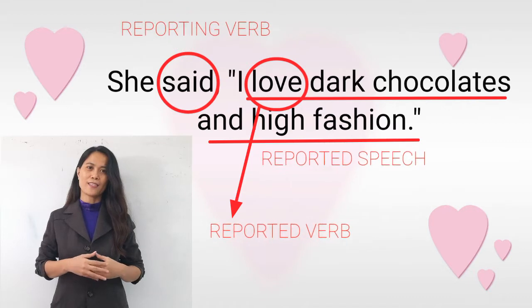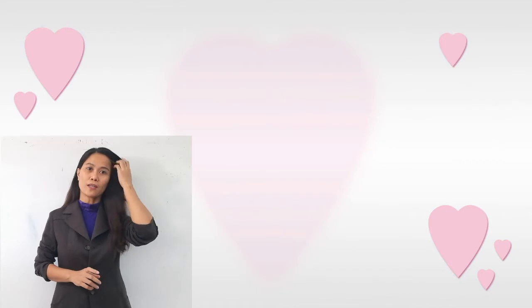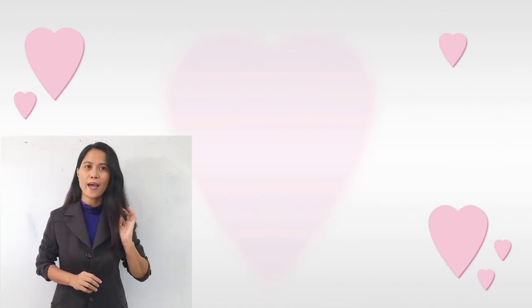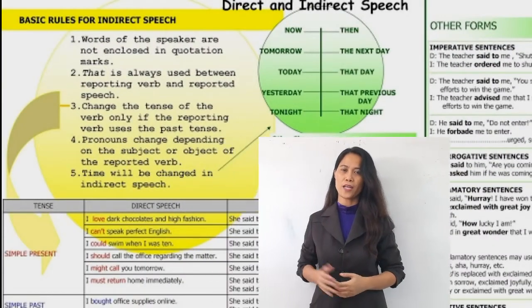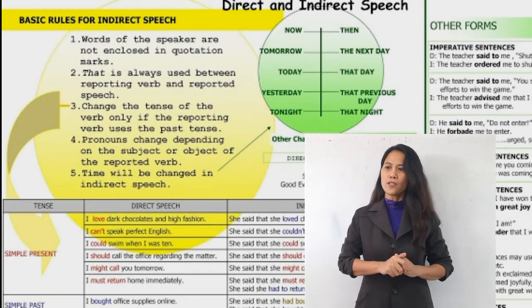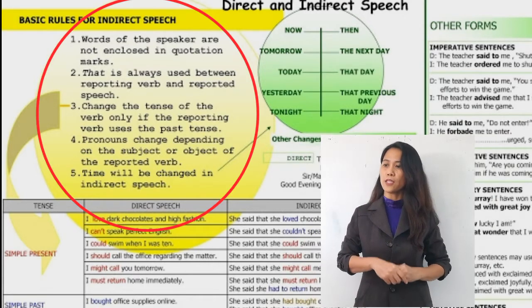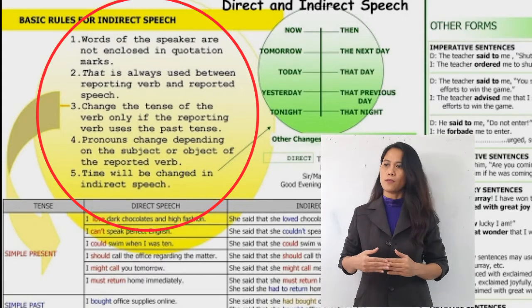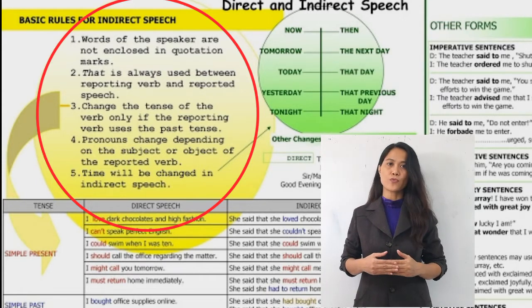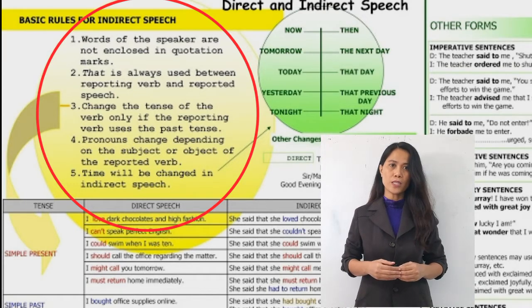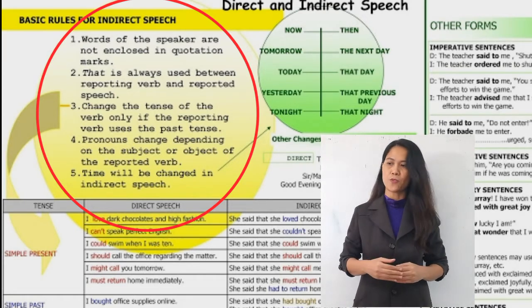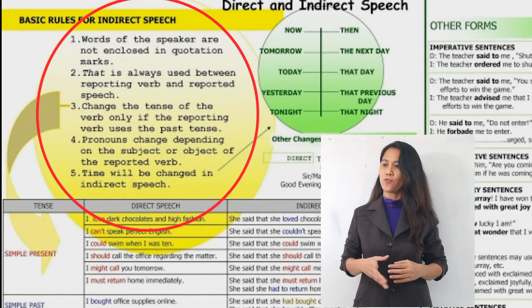Let's go now to the matrix. I would like to introduce to you the components of the matrix that I have crafted for the purpose of guidance. Here it is. You can see the yellow portion — that will take you through the basic rules on how to change direct statement to indirect or reported speech. I have presented five rules there.